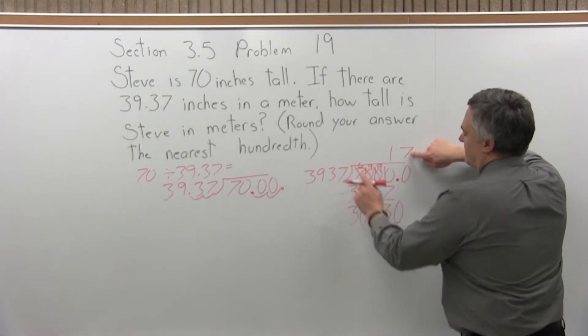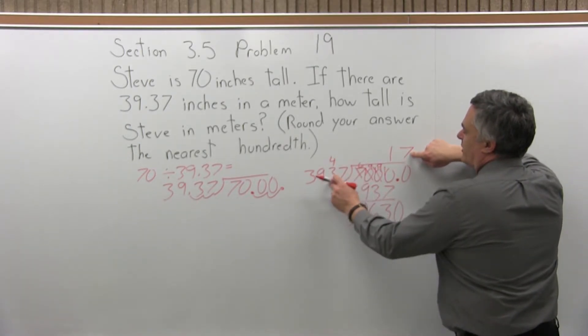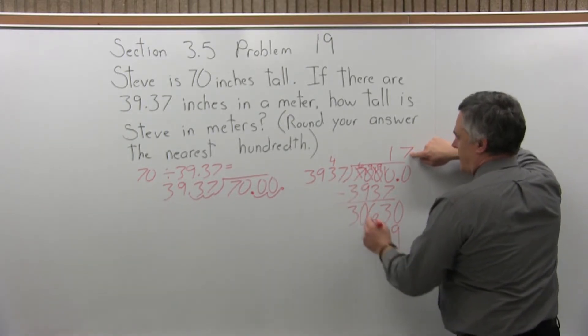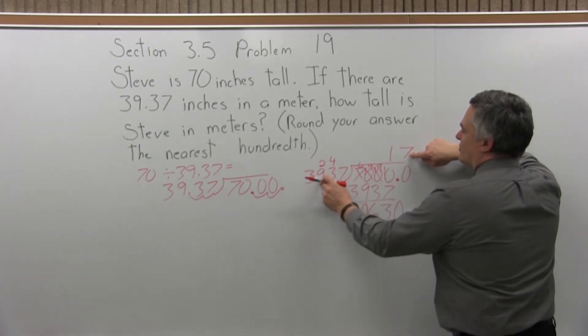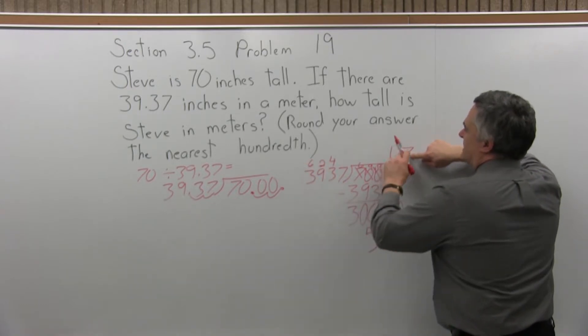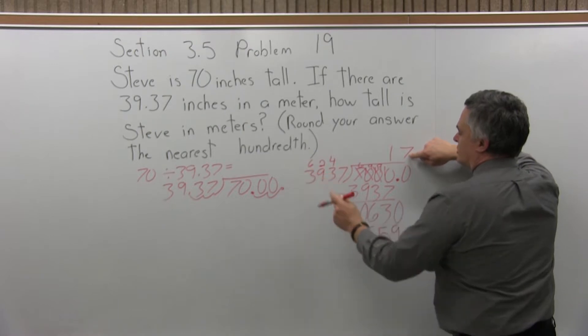7 times 7 is 49, write the 9, carry the 4. 7 times 3 is 21 plus the 4 that I carry, 21 and 4 is 25, write the 5, carry the 2. 7 times 9 is 63, 63 and 2 more is 65, write the 5, carry the 6. 7 times 3 is 21, 21 plus the 6 that I carried is 27.